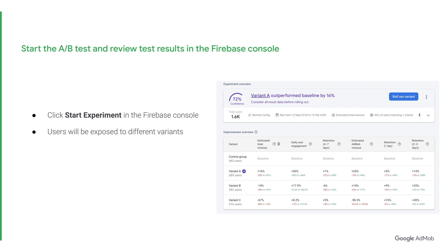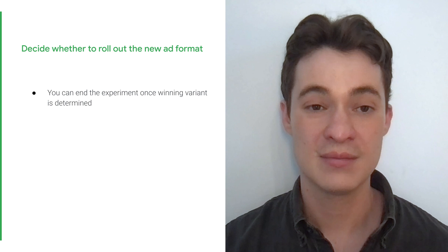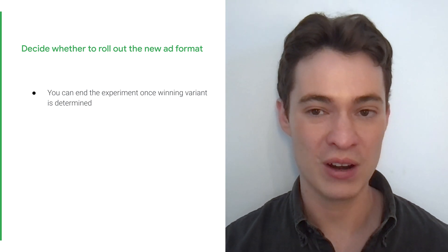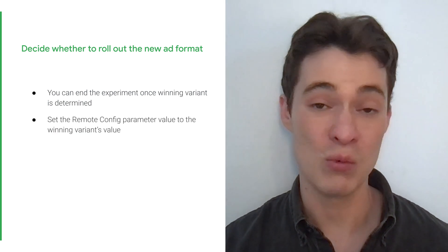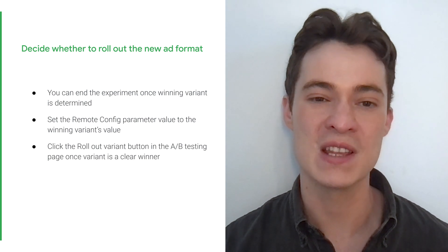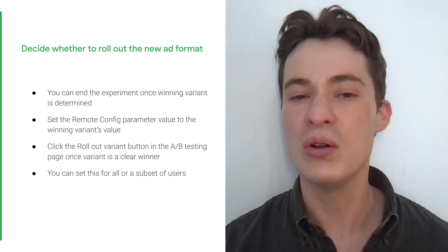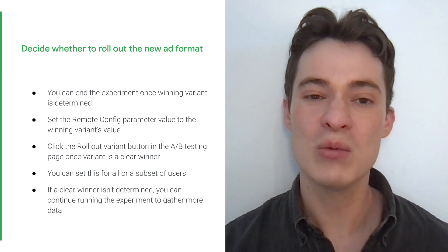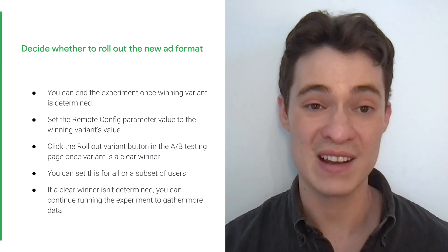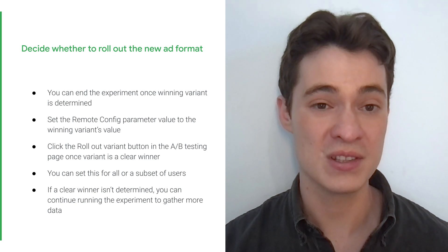After that, the Firebase console will display an improvement suggestion. You can then review how each variant performed based on the metrics that you selected during the test setup. Firebase A/B testing evaluates the experiment based on the primary metric that you've selected, and also provides you with data for all other secondary metrics. This allows you to account for a comprehensive set of metrics when determining a variant's performance at the end of the experiment. Finally, decide whether to roll out the new ad format or not. If A/B testing determines that the variant showing the new ad format is the winner, you can end the experiment, set the Remote Config parameter value to the winning variant's value, and click the Roll Out Variant button to make this the default setting for all users. Alternatively, if this variant has only shown success for a subset of your users, you can choose to roll it out only for a specific group. However, if a clear winner isn't determined yet, you can continue running the experiment to gather more data. If you've been running the experiment for a long time with inconclusive results, you can choose to end the experiment.